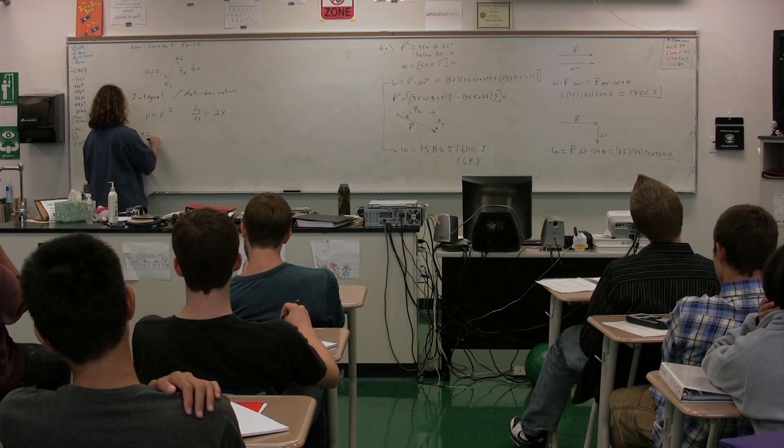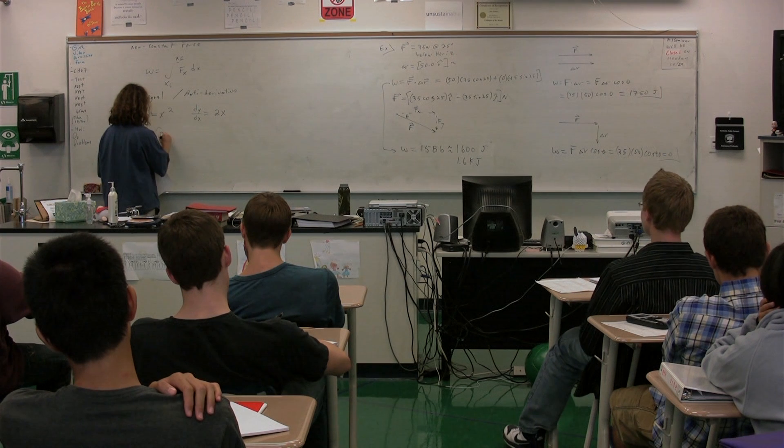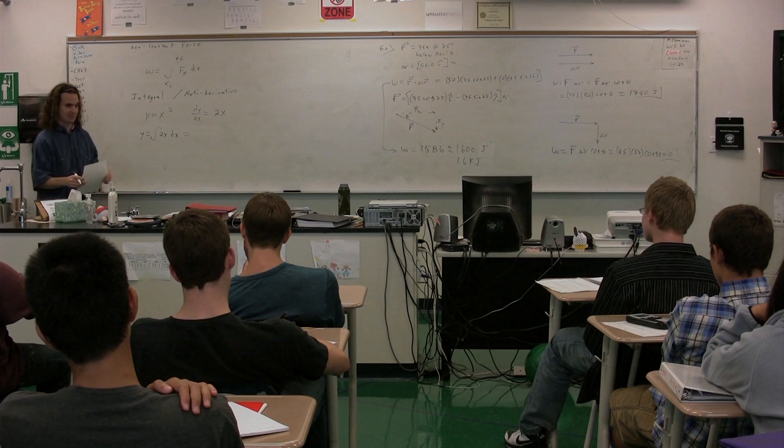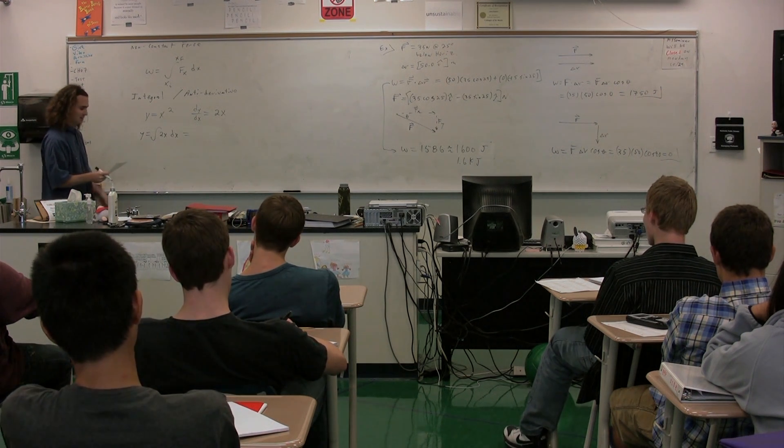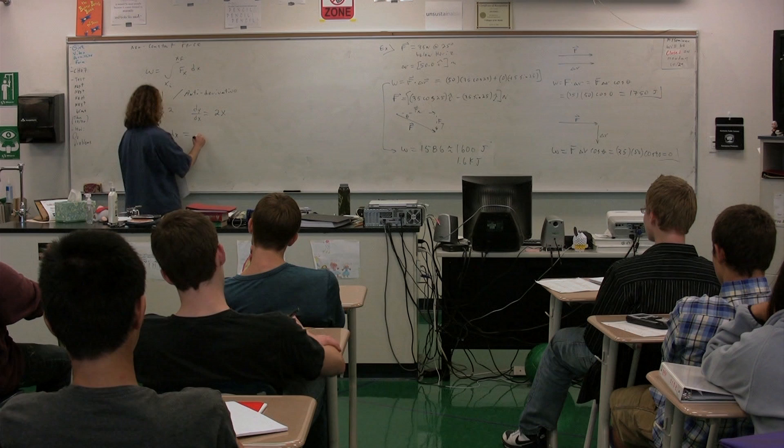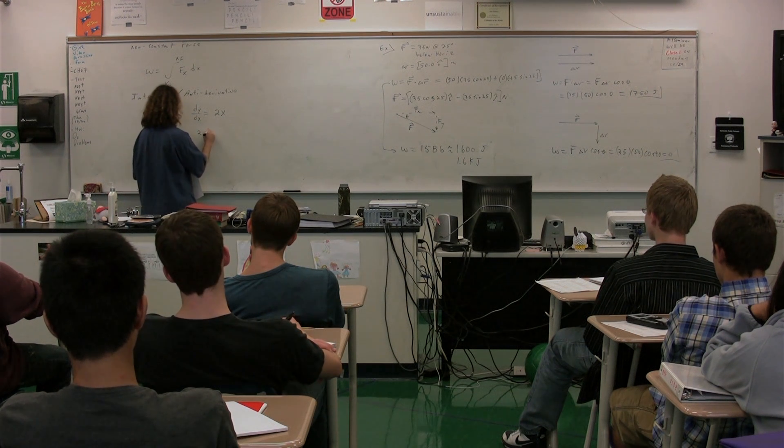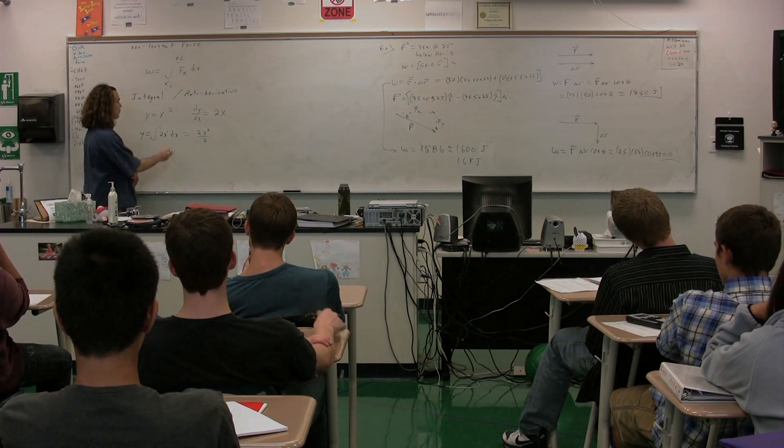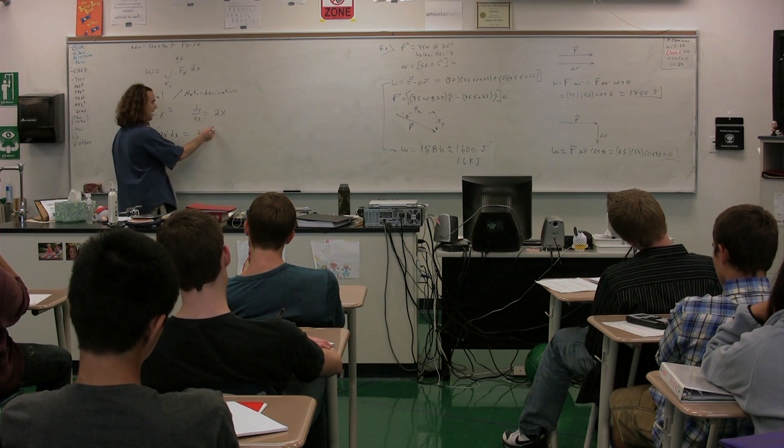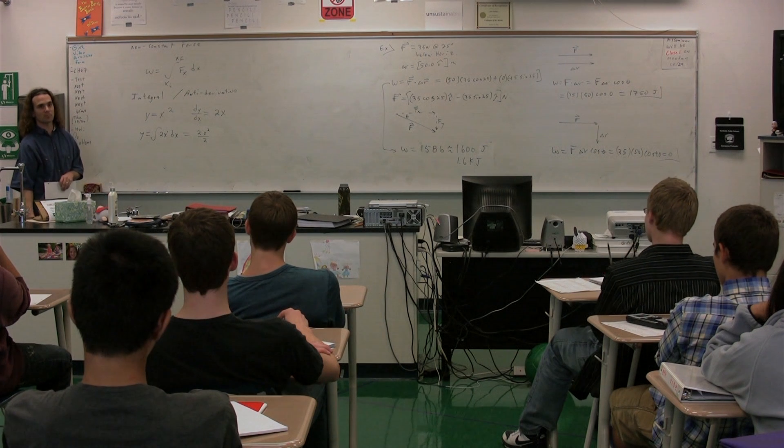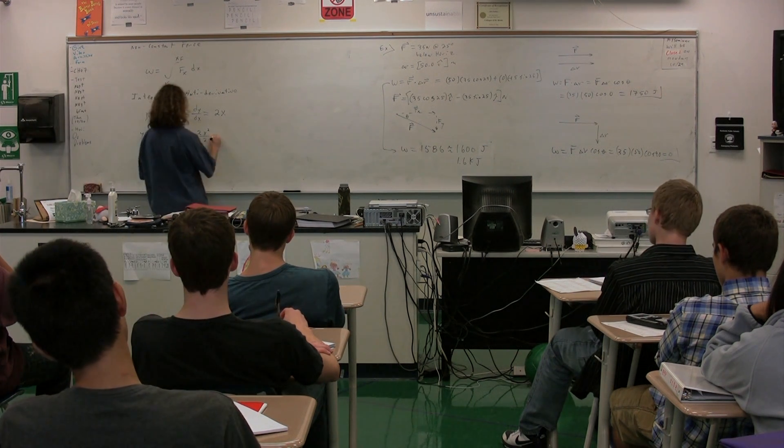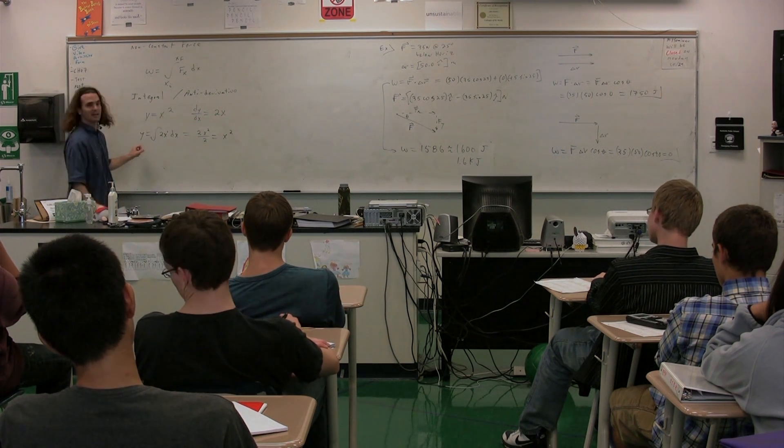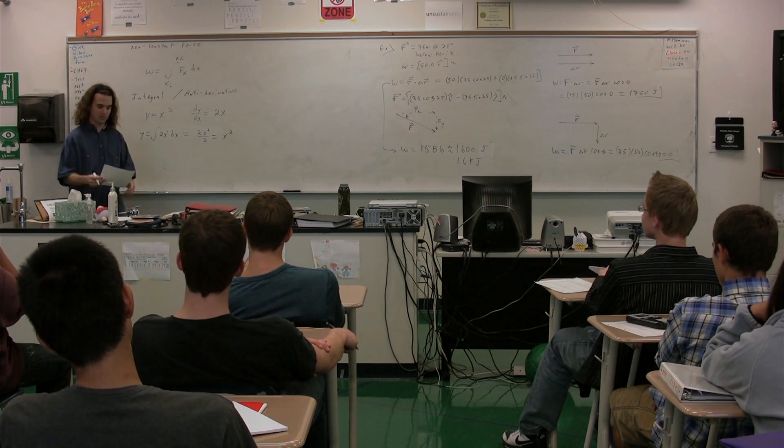So if y equals the integral of 2x dx, that's going to be equal to, Vlad? Let's do this, we'll do it in two steps. It's going to be equal to 2 times x squared divided by 2, right? Because this is x to the first power. So we raise the exponent by 1 and we divide by that raised exponent. And yes, it ends up being equal to x squared. And you can see how this is the derivative, this is the anti-derivative. The integral, the anti-derivative.